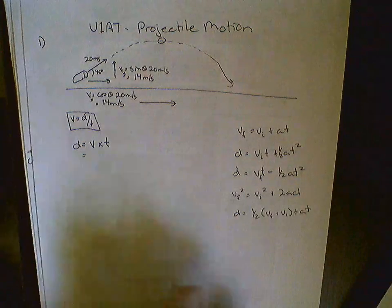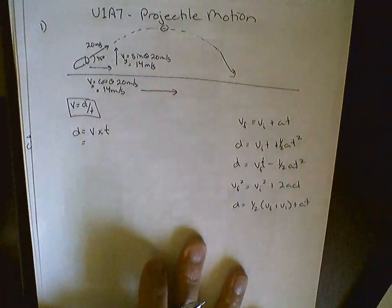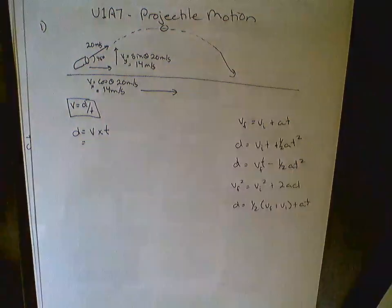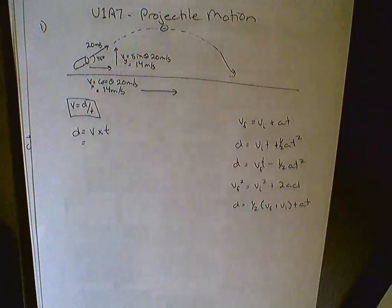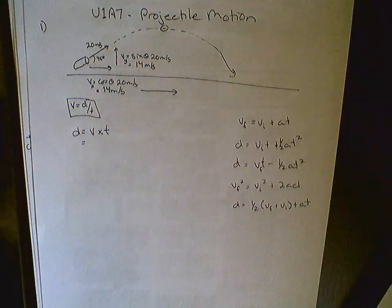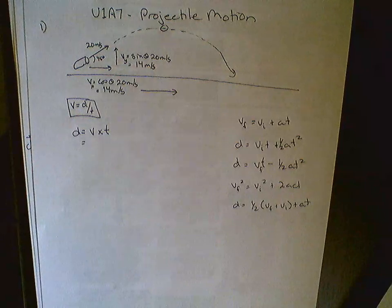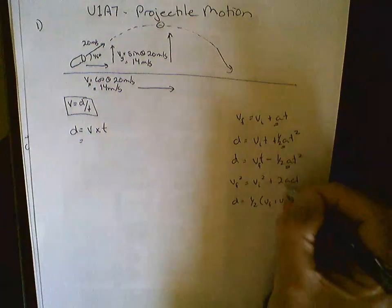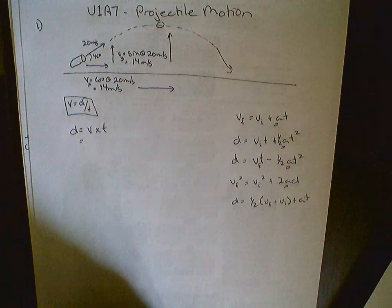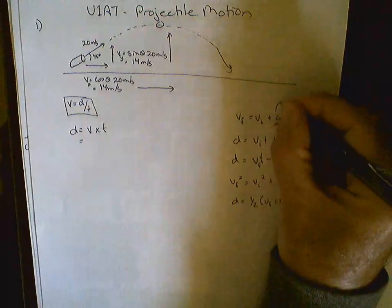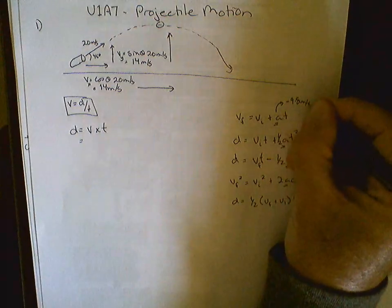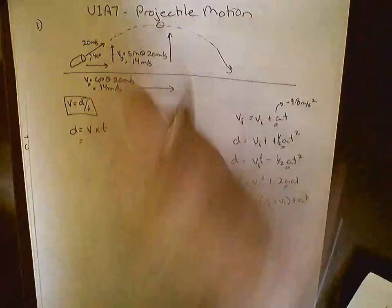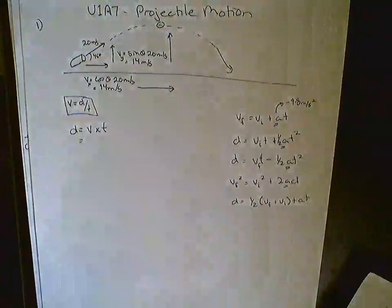If we want to find anything else in the Y direction, we can use any one of these. This is often called the toolbox in physics. It's all of the formulas that we can use in the Y component, so going up and down. These ones, but most of them have acceleration in them, which the acceleration is due to gravity, so that acceleration is usually going to be negative 9.8 meters per second squared in this particular type of calculation where we're shooting something out of a cannon.